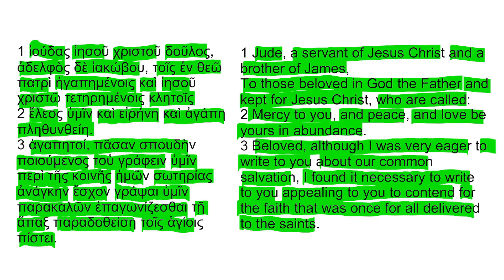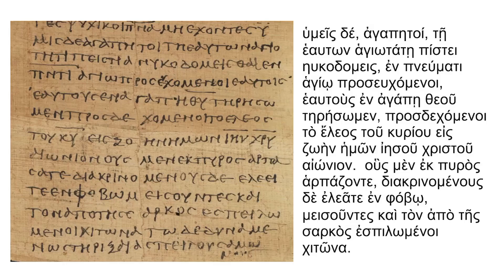Here we see Jude writing a letter, initially wanting to write about the topic of their common salvation. But he felt it was more necessary to urge them to contend for the faith that was in danger. He describes this threat in verse 4 as people slipping in among them who twist the teachings of Christianity and deny Jesus as Lord. The majority of the remainder of this letter is Jude's condemnation of these false believers.